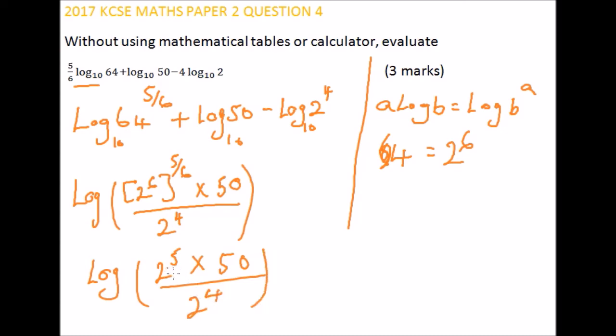So here we have 2 to power 5, and here we have 2 to power 4. So here there's one, two more in the numerator than denominator. So this will be the logarithm of 2 multiplied by 50.